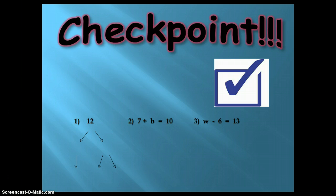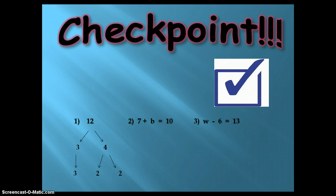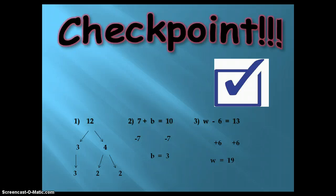Good job, everyone! One, there is a little mistake but you all managed to figure that out. Very good! The breakdown of 12 is 3 and 4. And then lastly, 3, 2, and 2 are the answers. Second, you subtracted the 7 from both sides and found that B equals 3. Lastly, you added the 6 to both sides and found that W equals 19.